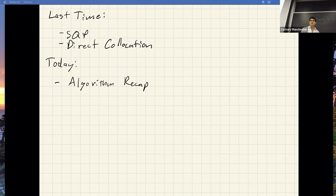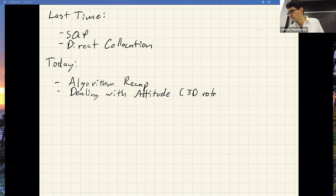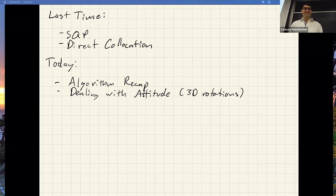We're going to compare the indirect DDP-style approach versus the direct collocation-style approach, when you might want to use either one, and then we're going to start the whole attitude discussion — basically how to do stuff with 3D rotations, like doing cool things like backflips.